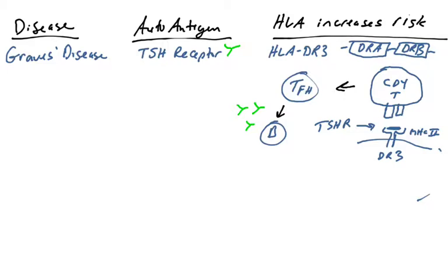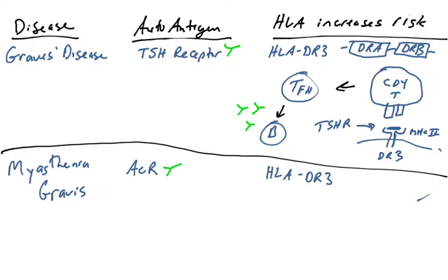Doesn't cause it, you don't need it. Other people get Graves' disease without it, but individuals who have DR3 have a higher risk of Graves' disease. For myasthenia gravis, the autoantigen is the acetylcholine receptor. And again, this HLA DR3, its presence in the genome, increases a person's risk of getting this disorder.